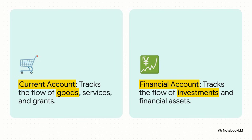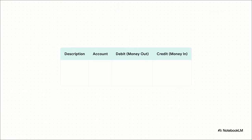The easiest way to think about it is like this. The current account is like your daily spending and income — it's for goods, services, that kind of thing. The financial account, on the other hand, is more like a country's investment portfolio — it tracks the buying and selling of assets like stocks, bonds, or even entire companies. We'll build out a simple ledger together: a description of the deal, which account it belongs in, and whether it's a debit — money leaving the country — or a credit — money coming in.